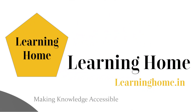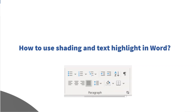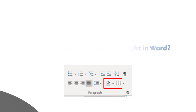A very warm welcome to the Learning Home. In this tutorial, we are going to discuss how to use the shading and highlight feature in Microsoft Word. I am using Microsoft 365, which is the latest version as of now, and if you are using a different version of Microsoft Office you may see a little difference in appearance.